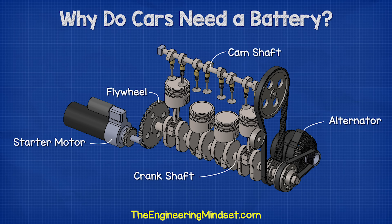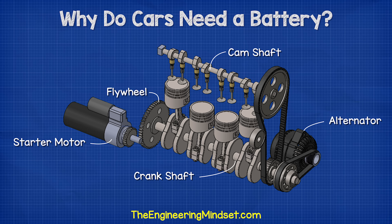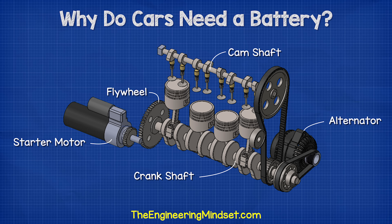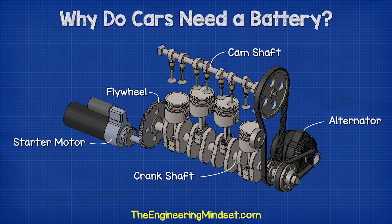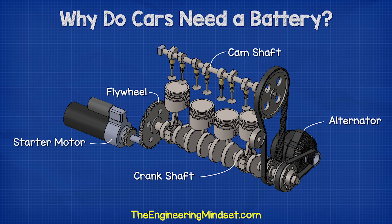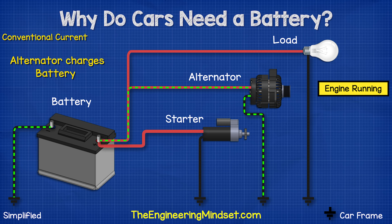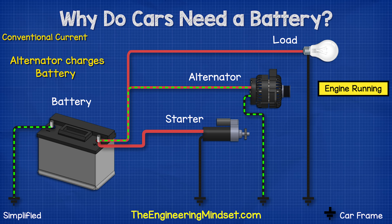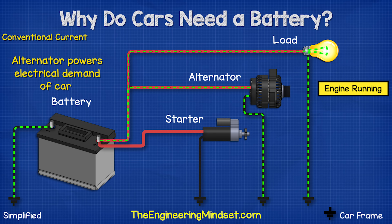Connected to the engine is an alternator. The alternator is rotated by the engine, and as it rotates, it generates electricity. This electricity is fed back into the battery to recharge it. While the engine is running, the alternator recharges the battery, but it also provides the electrical power for things such as lighting and the music system.